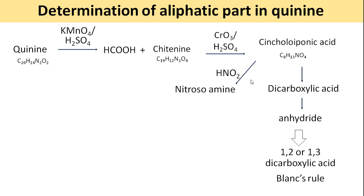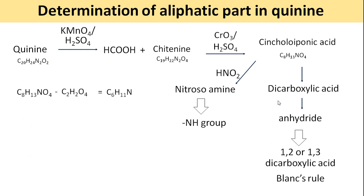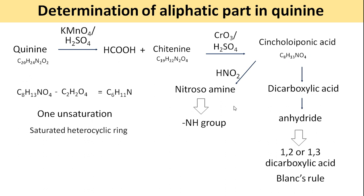Synchaloponic acid treated with HNO2 gave a nitrosoamine, indicating the nitrogen is a secondary amine — not tertiary as in quinine, but a secondary amine in this degraded product. Subtracting two COOH groups (C2H2O4) from C8H13NO4 leaves C6H11N — only one unsaturation, pointing to a saturated heterocyclic ring like piperidine or pyrrolidine.